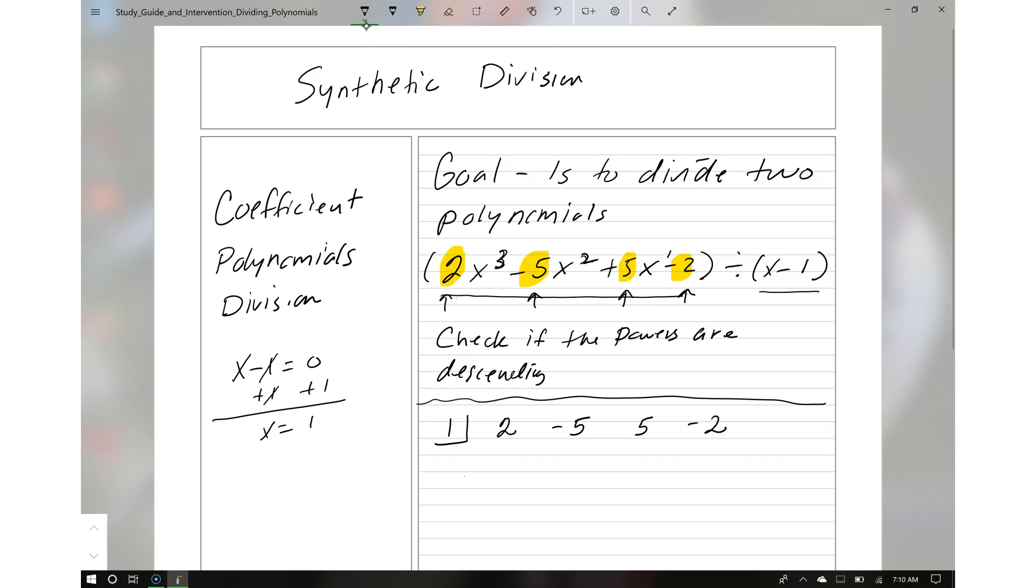Now what you need to do is draw a line, a horizontal line. Bring down the 2. And then what you're going to do with these two numbers is multiply. And whatever the product is, you're going to place it right here. So you bring down the 2. 1 times 2 is 2. Negative 5 plus 2 gives you negative 3. Once again, you're going to multiply 1 times negative 3, which gives you negative 3. Then you have 5 minus 3, which is 2. And then we have 1 times 2 is 2. And you notice that negative 2 plus 2 is 0.